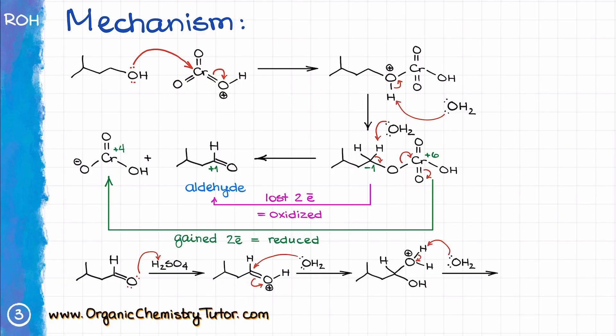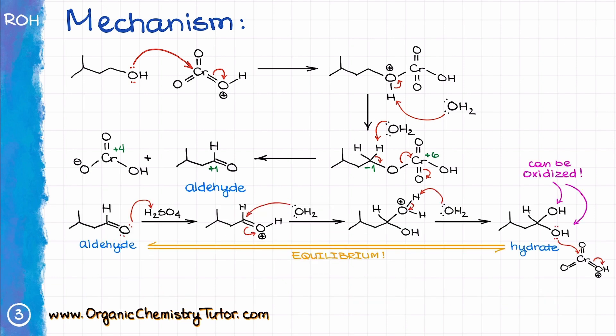Then, after the intermediate loses the proton to the environment, we get a hydrate, a molecule with two OH groups on the same carbon. This is an equilibrium process, and the reaction can go back to the aldehyde form. But here is the catch. As soon as we form the hydrate, it can undergo another round of oxidation, since the oxidizing agent is still floating around.